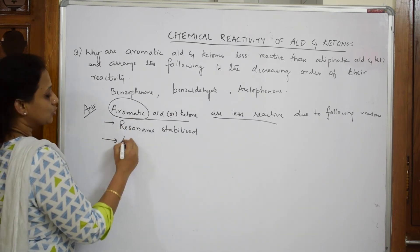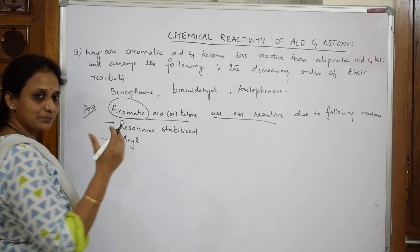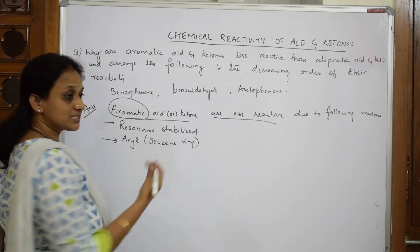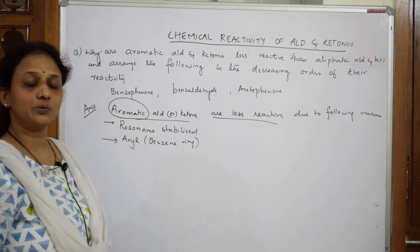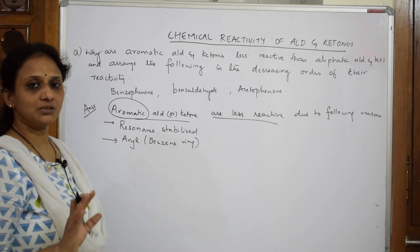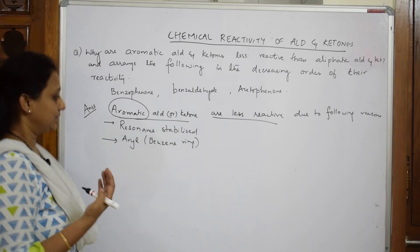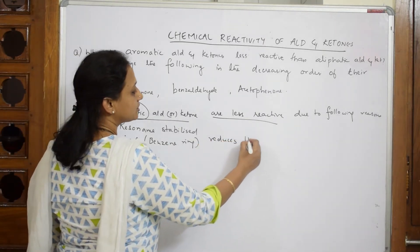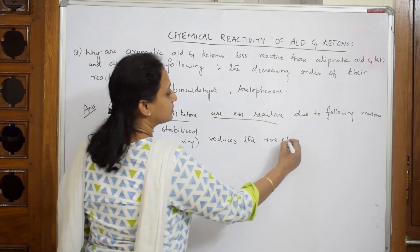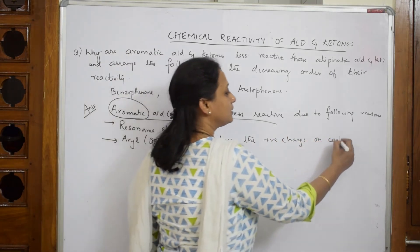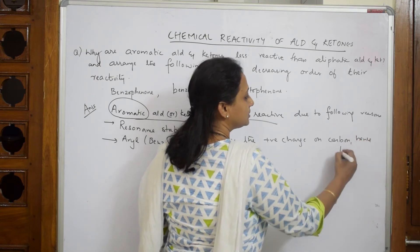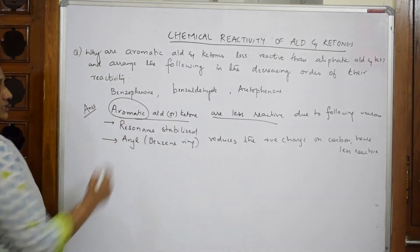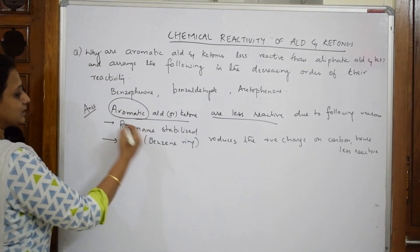The next important thing is your aryl group. Aryl means the benzene ring. So the benzene ring which is there along with this aldehydic group or ketonic group — not always, but it depends upon the particular substituent — in this particular case, the benzene ring reduces the positive charge on carbon. Hence, less reactive. I have given you two reasons — first, try to write the reasons so the examiner can put a tick and give you marks.